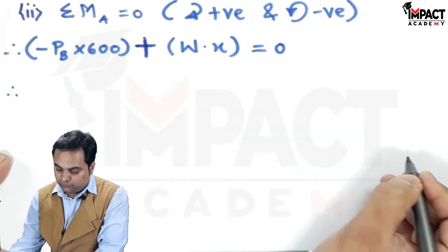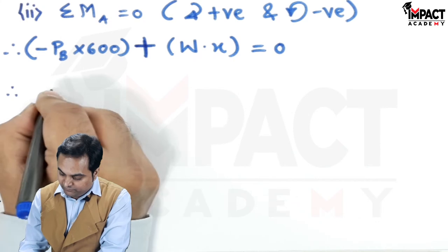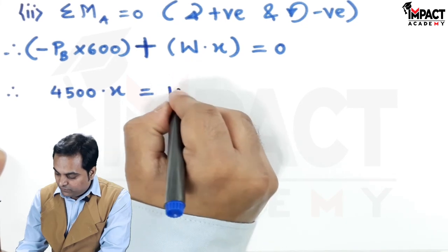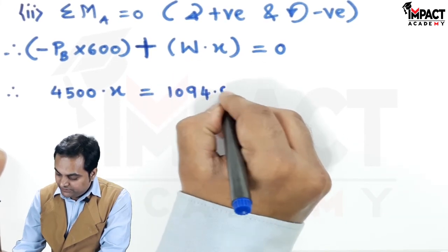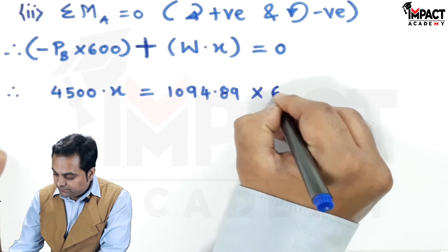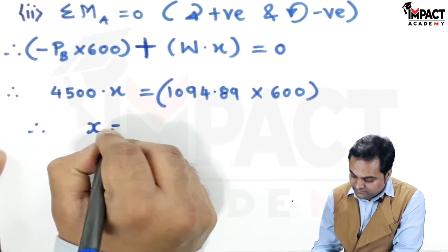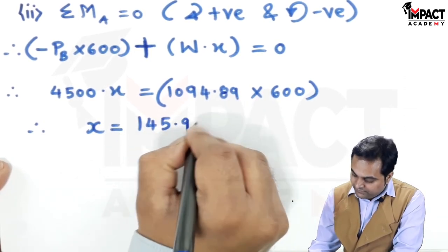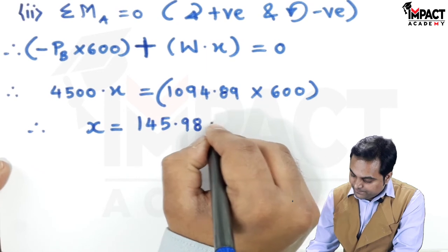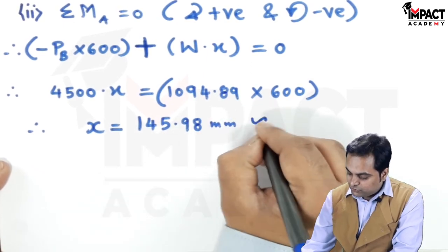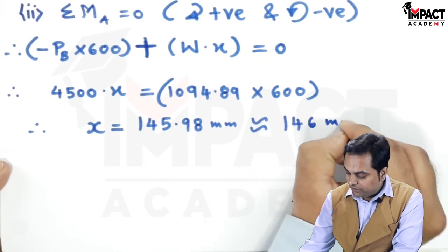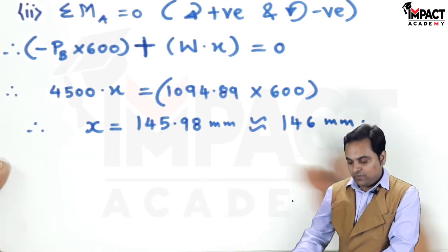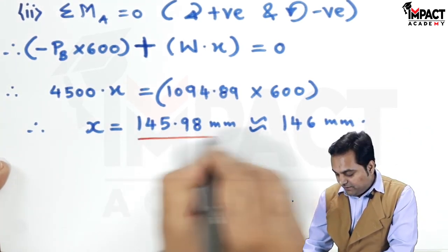Rearranging: P_b × 600 = W × x. Substituting values: 1094.89 × 600 = 4500 × x, giving x = (1094.89 × 600) / 4500 = 145.98 mm, approximately 146 mm. So the load should be placed at a distance of 146 mm from Point A, or from the left-hand side. That is the first answer.